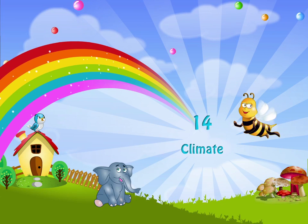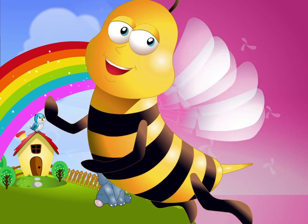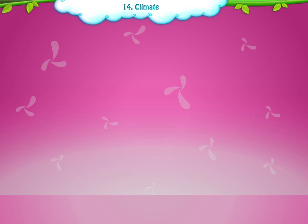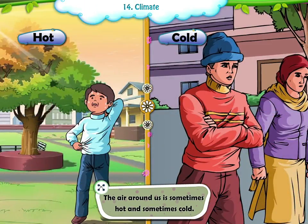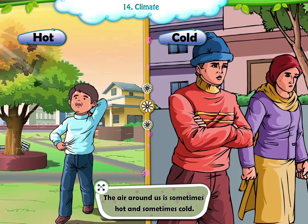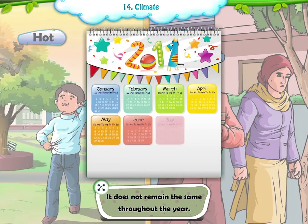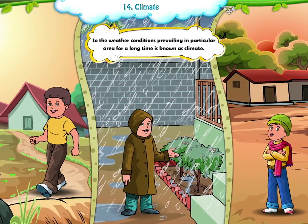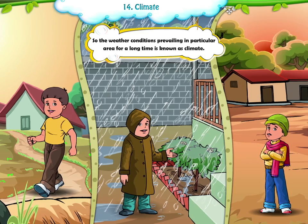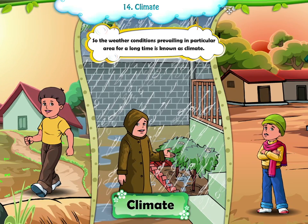Chapter 14: Climate. The air around us is sometimes hot and sometimes cold. It does not remain the same throughout the year. The weather conditions prevailing in a particular area for a long time is known as climate.